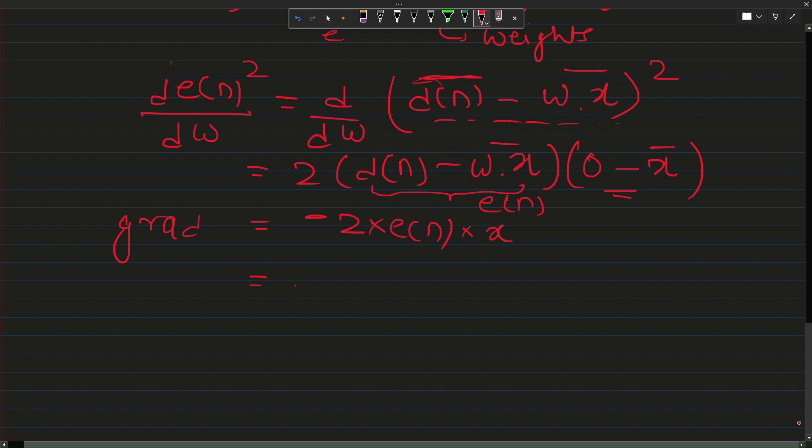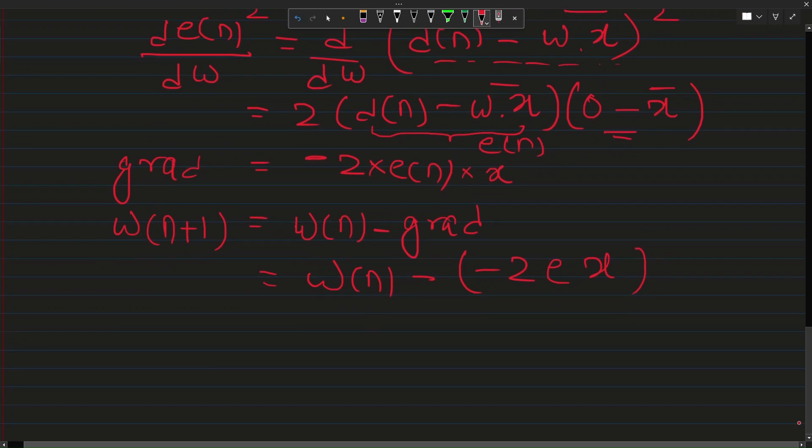That is the reason why we update the weight, the next weight with the old weight minus the gradient. The expression becomes minus 2 into error into x. I am not following the correct mathematical notation for the purpose of simplicity but I am just saying how this whole equation gets formed. Essentially this is the new weight, this is the old weight and this is the change.